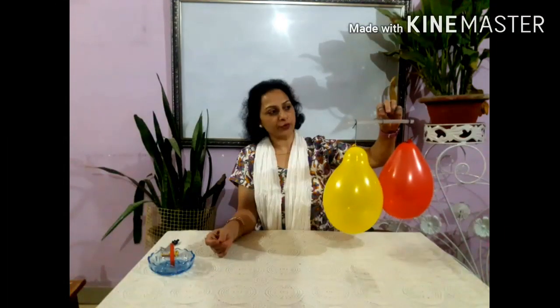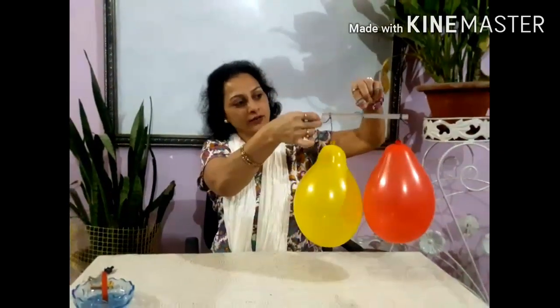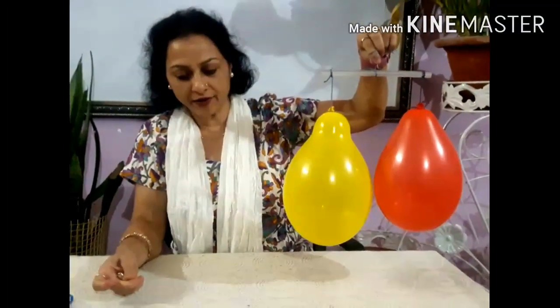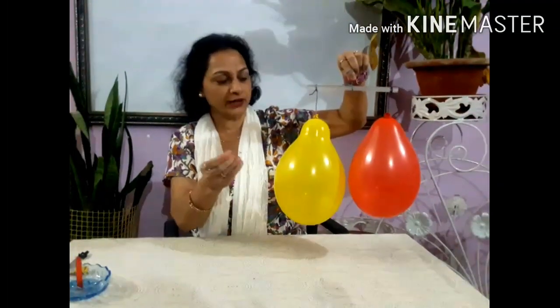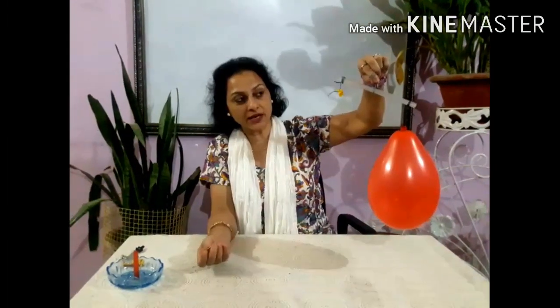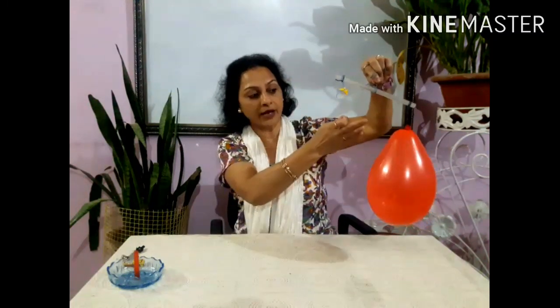Now the next property of air is that air has mass. You can see this rod here — I have tied up two balloons filled with air and you can see how balanced it is, like a beam balance. Now let's see what happens if I prick one balloon. The air from it will escape. I'll prick the yellow one. See now — the rod has tilted towards the red balloon, indicating that it is now heavier. Earlier it was balanced. What escaped was the air, making the red balloon heavier, indicating that air has mass.